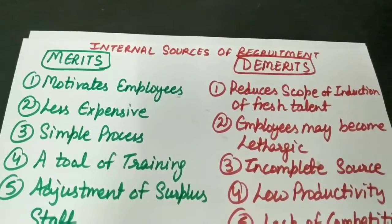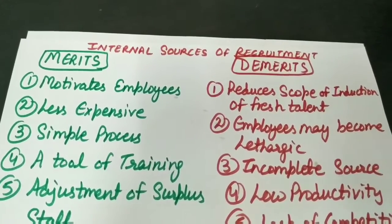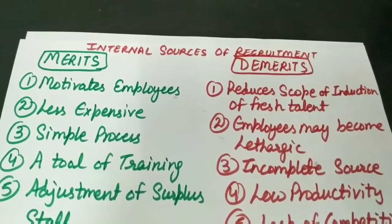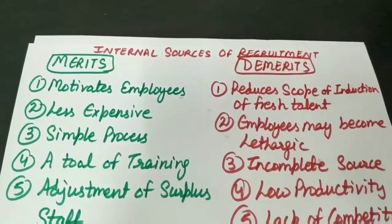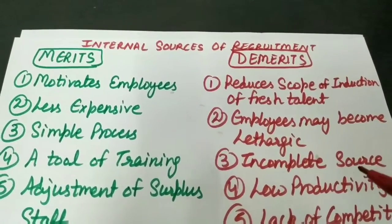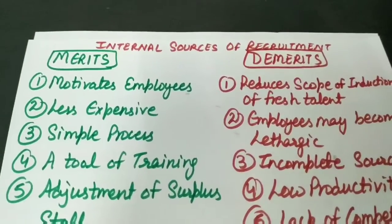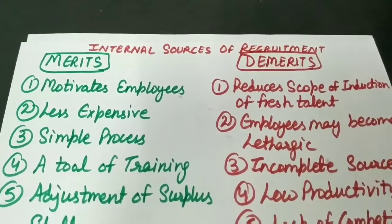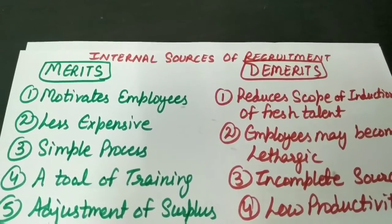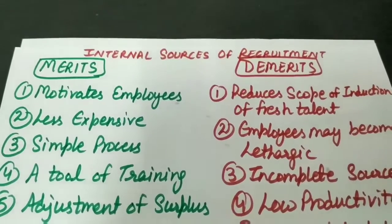Also, in the organization, peace prevails, kyunki jo bhi kaam ho raha hai, peacefully kiya ja raha hai due to promotional avenues. Next merit is less expensive. Internal source of recruitment jo hai yeh economical hai, kyunki when we are filling jobs internally, that is basically cheaper as compared to getting candidates from external sources. Third merit is simple process - the process of selection or placement is basically very simple, kyunki jo candidates already humari enterprise mein work kar rahe hain, hum unki performance ko evaluate kar sakte hain accurately and economically.